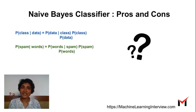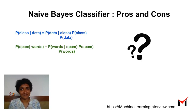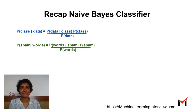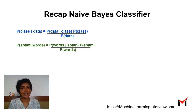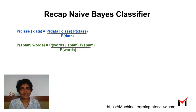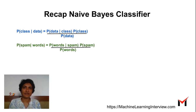What are the pros and the cons of the Naive Bayes classifier? Naive Bayes classifier is a very popular classification algorithm which is easy and simple to use. Let's quickly recap how the Naive Bayes classifier works.